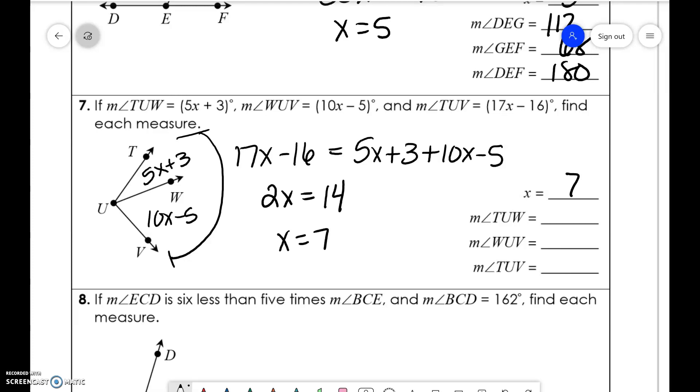All right. And then we're just plugging it in. So TUW is 5 times 7 plus 3, which is 38. 10 times 7 minus 5 is 65. And 17 times 7 minus 16 is 103.